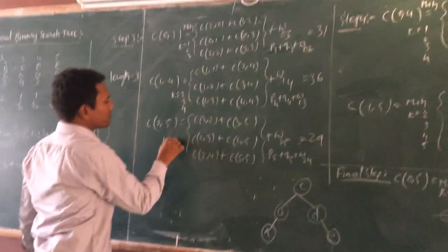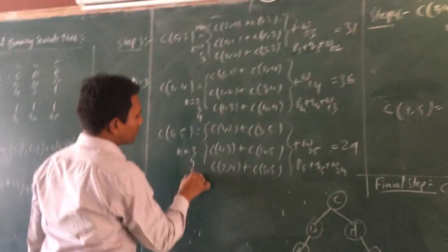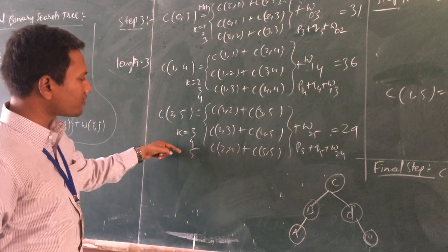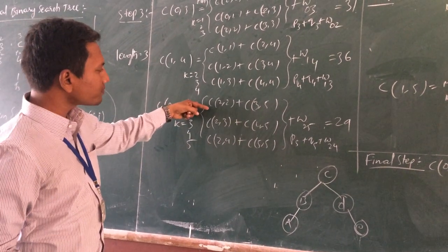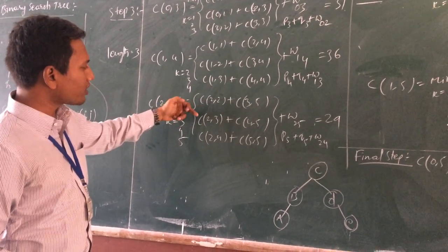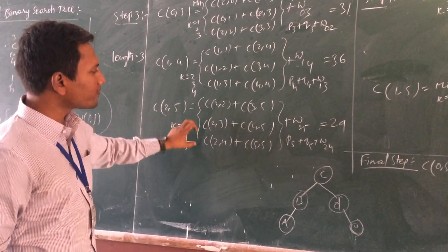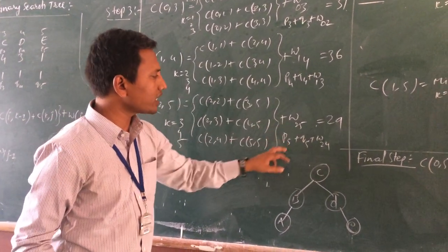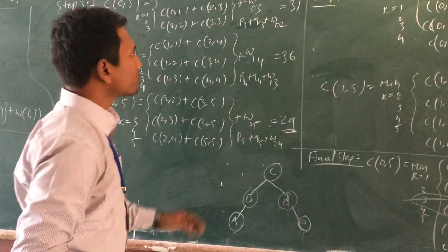2 to 5, so root possibility is 3, 4, 5. We have to find the root value, we have to find the minimum value. So weight of 2 to 5, we are going to get some value. Next we are going for step 4.